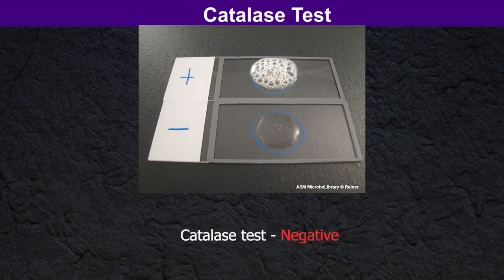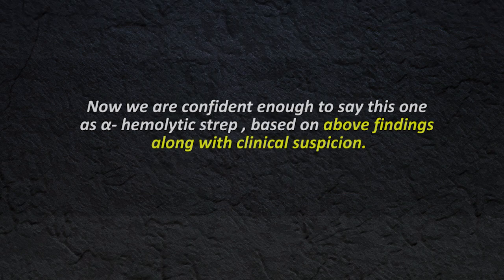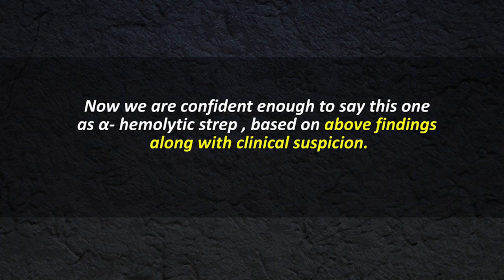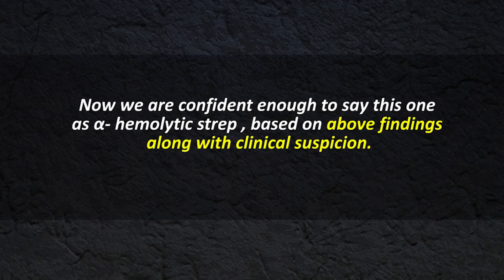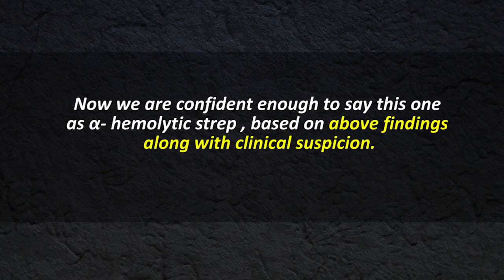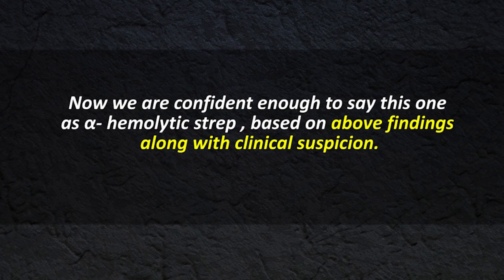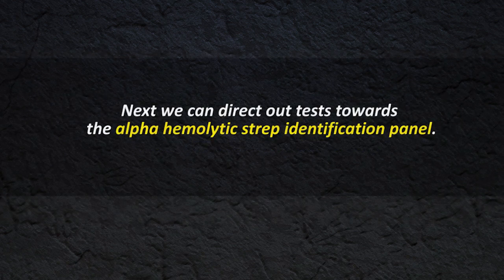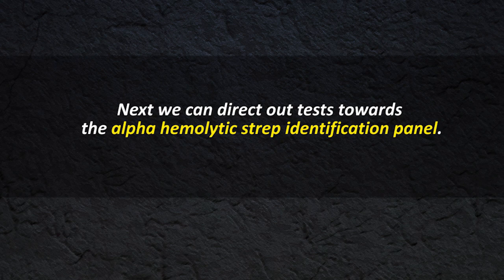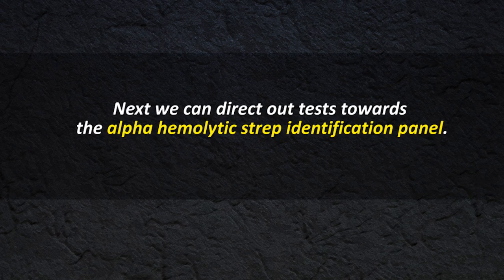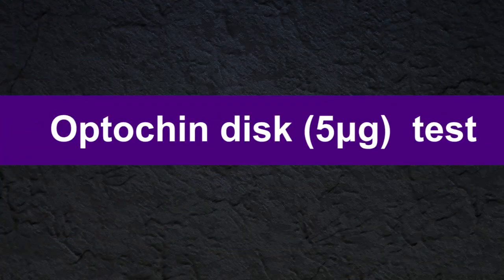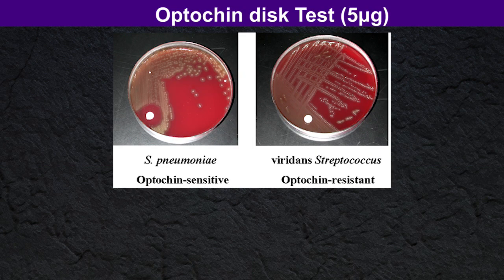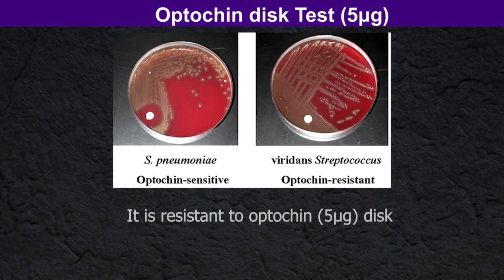We then prepare a smear for Gram stain and can observe gram-positive cocci in chains under light microscopy. If we perform the catalase test, it is catalase-negative. Now we are confident enough to identify this as alpha-hemolytic streptococci based on the above findings, along with clinical suspicion. Next, we can direct our tests towards the alpha-hemolytic streptococci identification panel. First, we perform the optochin disc test — viridans streptococci are resistant to the optochin disc.